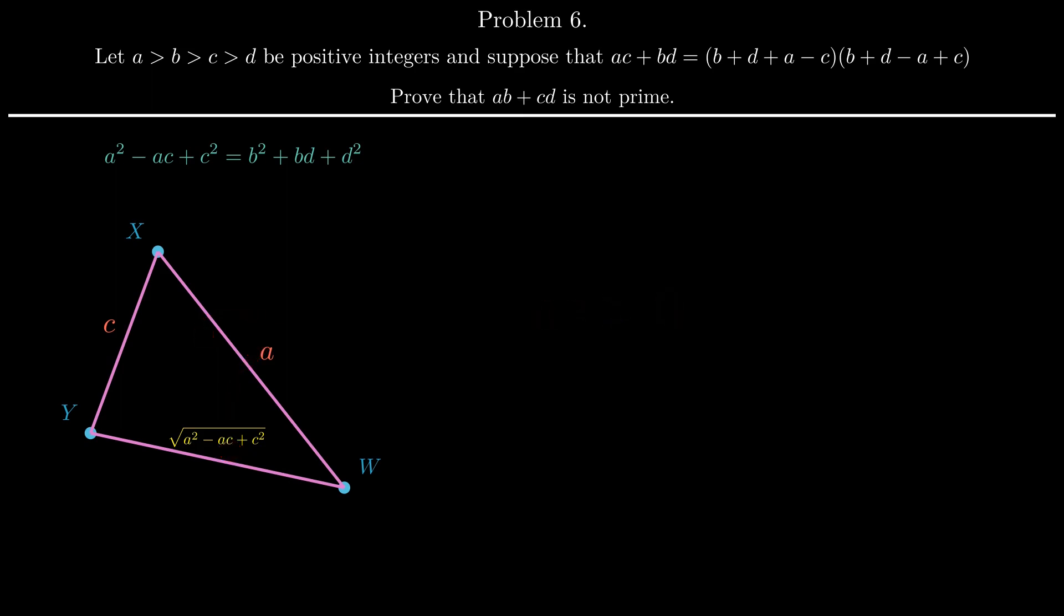Now to answer why we chose these lengths, we know that if we denote the angle YXW as alpha and use the law of cosines, we have the following. Squaring on the left and simplifying things out, we notice that ac times 2 cosine alpha minus 1 is 0.